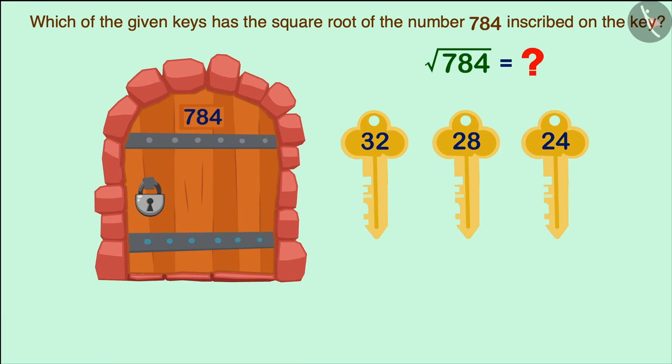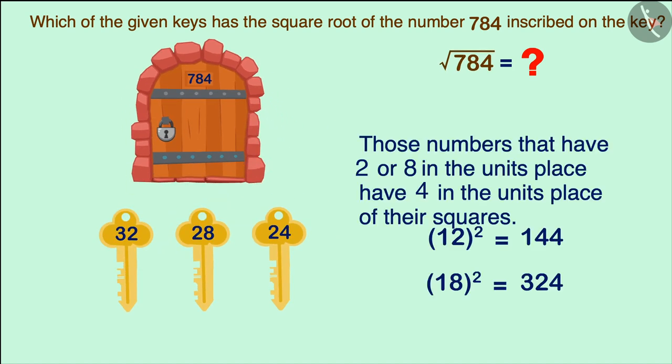The number 784 is a perfect square number with 4 in its units place. We know that only those numbers that have 2 or 8 in the units place have 4 in the units place of their squares.